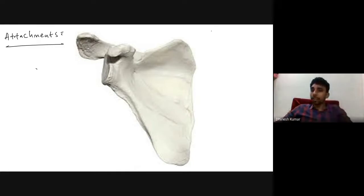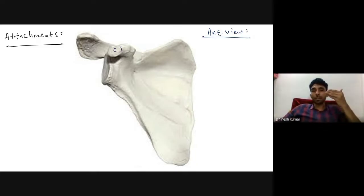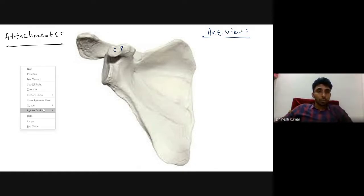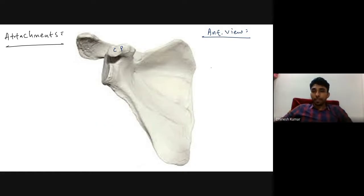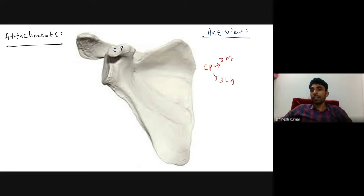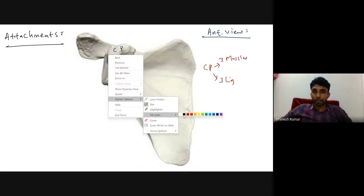This is the anterior view of the scapula, because you can see the coracoid process facing anteriorly. Can you name the three muscles and three ligaments attached to the coracoid process of the scapula?